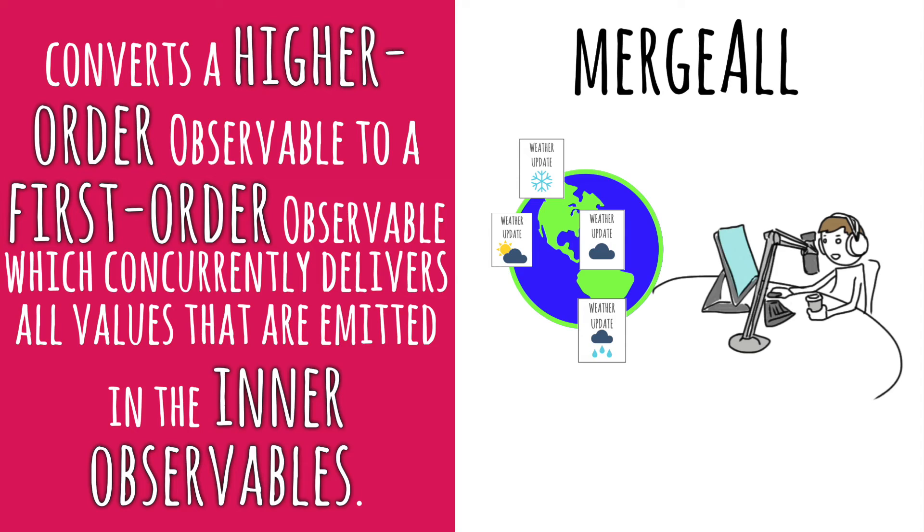If the radio announcer works for a national station and reads any weather report from any city as it comes in, then he's an observable of observables, since the latest report for each city is an observable and he's observing reports for all cities. So if he's reading all reports from all cities as they come in, he represents mergeAll. MergeAll converts a higher-order observable into a first-order observable, which concurrently delivers all values emitted in the inner observables.